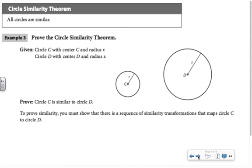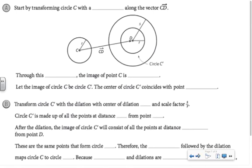We can use similarity in order to prove that all circles are similar. Consider I have circle C with center C and radius R, circle D with center D and radius S. I'm trying to prove that circle C is similar to circle D. In order to prove similarity, we have to show that there was a sequence of similarity transformations mapping circle C to circle D.